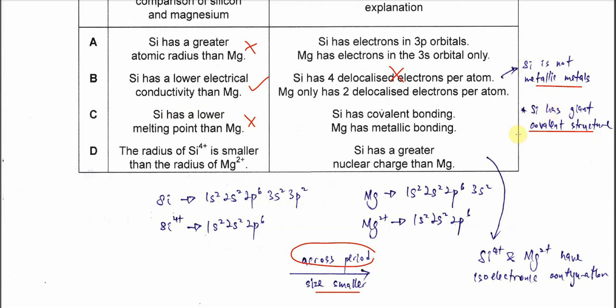Therefore, the statement itself is wrong. Silicon actually has a much higher melting point than magnesium.